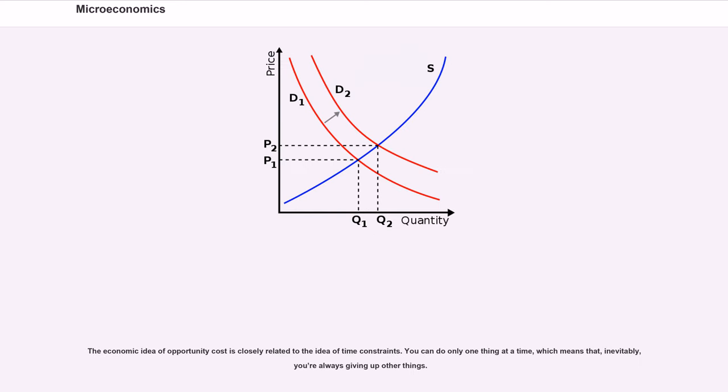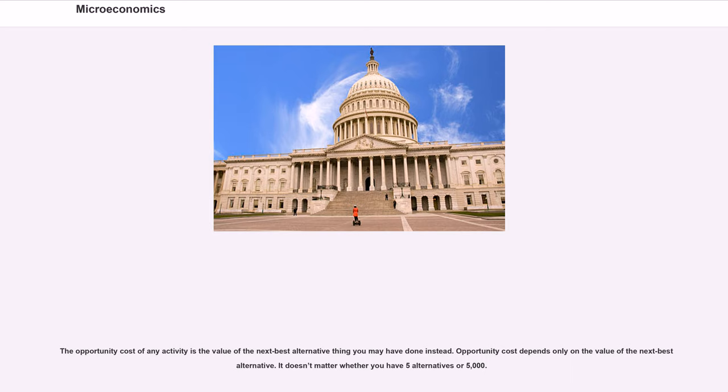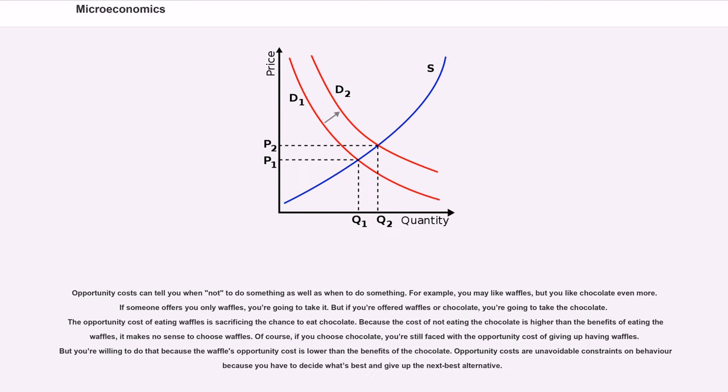The economic idea of opportunity cost is closely related to the idea of time constraints. You can do only one thing at a time, which means that, inevitably, you're always giving up other things. The opportunity cost of any activity is the value of the next best alternative thing you may have done instead. Opportunity cost depends only on the value of the next best alternative. It doesn't matter whether you have 5 alternatives or 5,000.